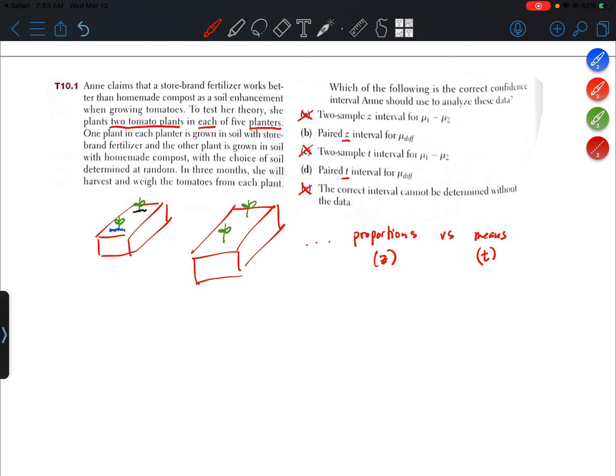Now in this question, let's see, what does it say? Well, it doesn't say proportions or means. But she is going to be weighing the tomatoes, right? So she's going to be recording numbers, quantitative data. And so she would summarize quantitative data with a mean, not with a proportion.